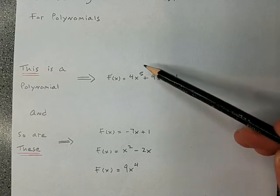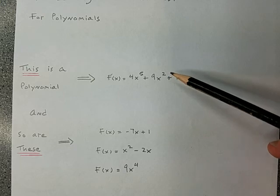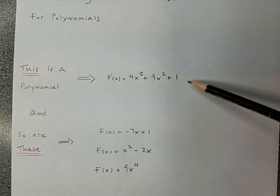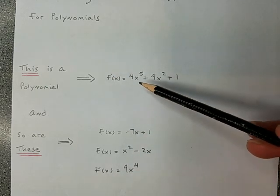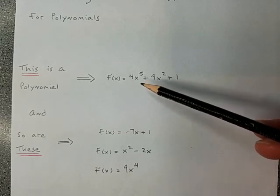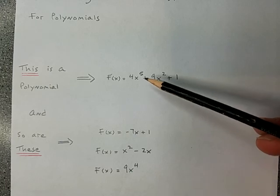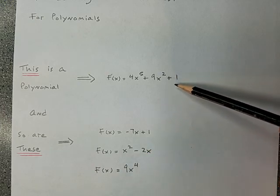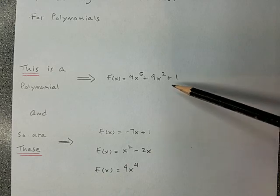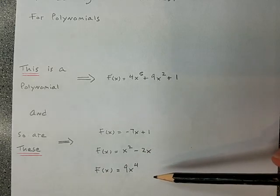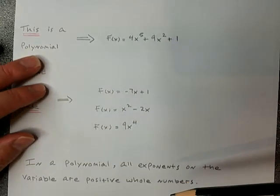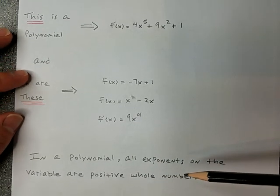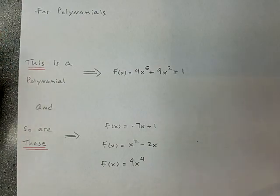So that's a 5 as the power on that term, and a 2 as the power on another. Here the powers are 1, 2, 1, and 4. In every single example, the exponent on the variable is always a positive whole number. There are no negative powers and no roots of any kind. You might also have a constant term. If you want it written out: all exponents on the variable are positive whole numbers.